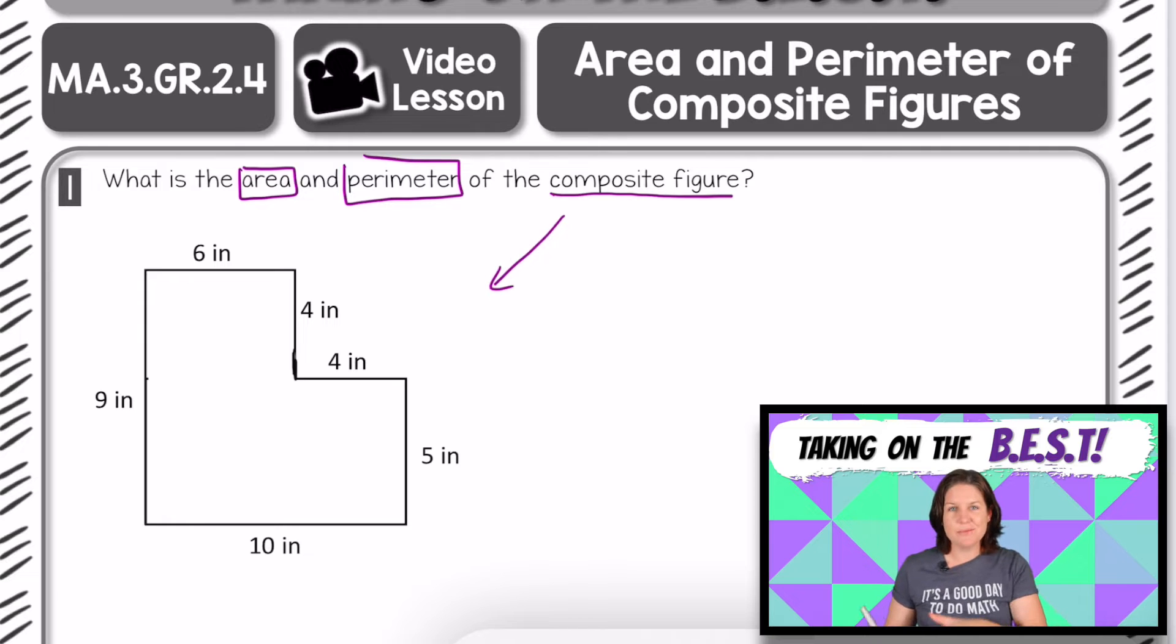So I'm looking here, and I see a bunch of different side lengths. I'm trying to figure out where can I make a break in this composite figure to isolate some rectangles and figure out the area and the perimeter. Let's see what we've got here. So I'm seeing 6 inches, 4 inches, 4 inches, 5 inches, 10 inches, and 9 inches. So it looks like we have the entire perimeter accounted for. So you know what? Let's go ahead and figure out the perimeter first.